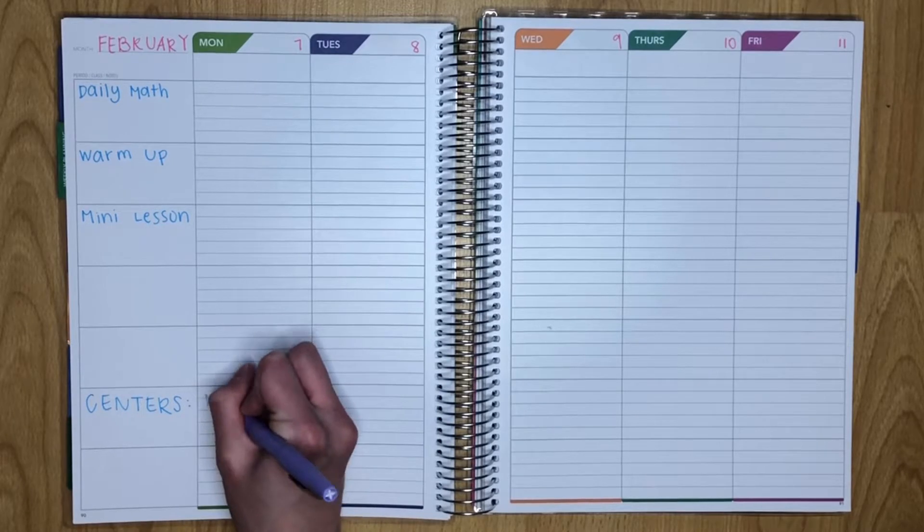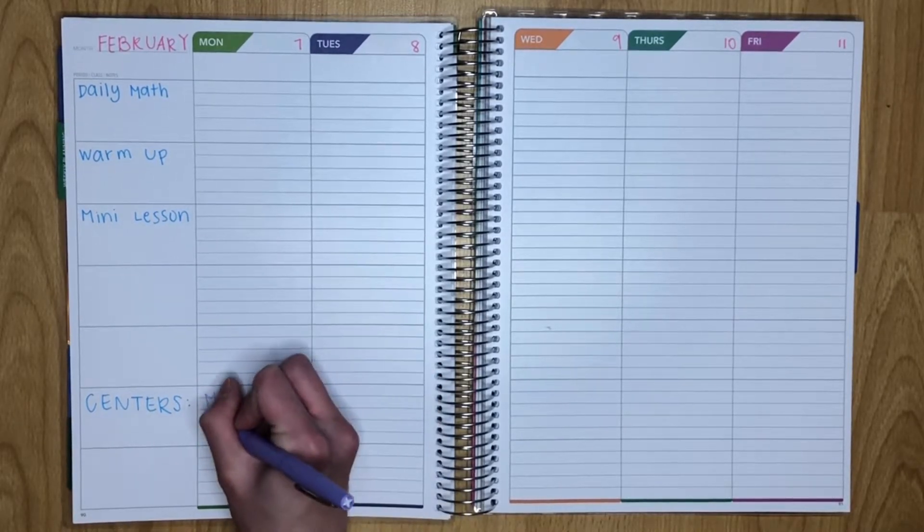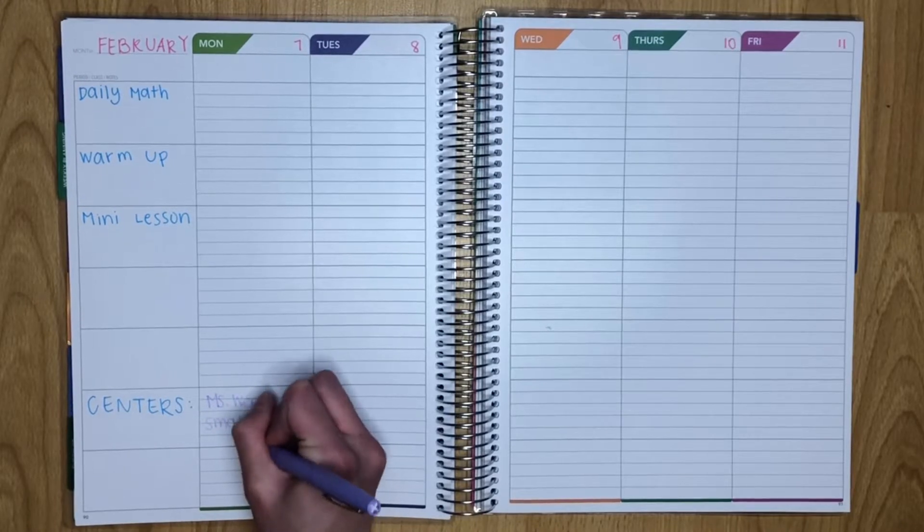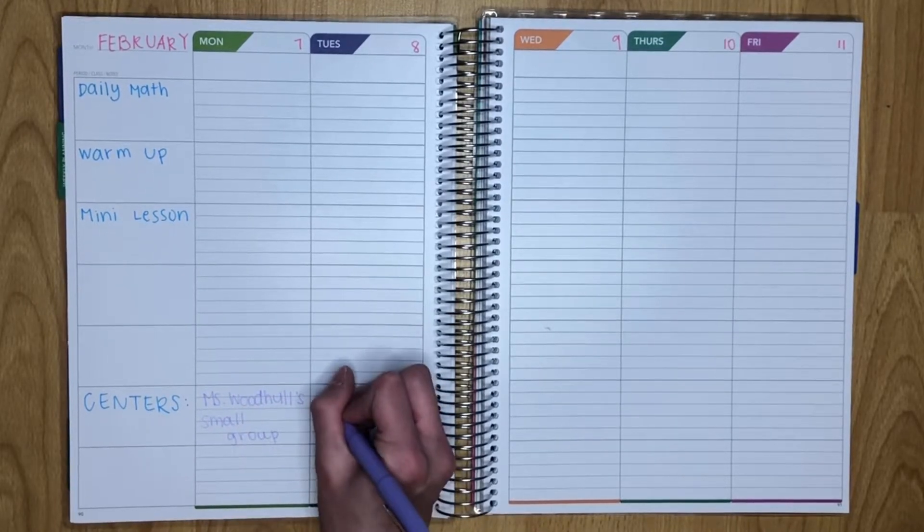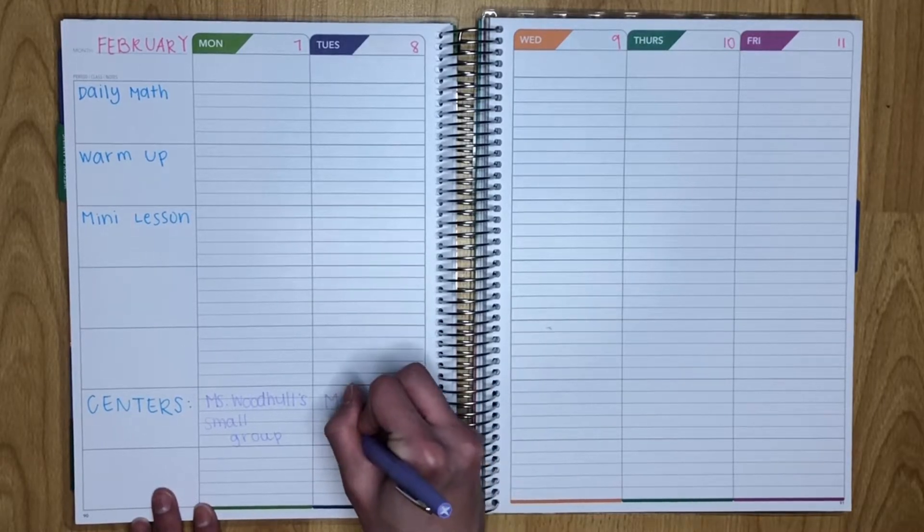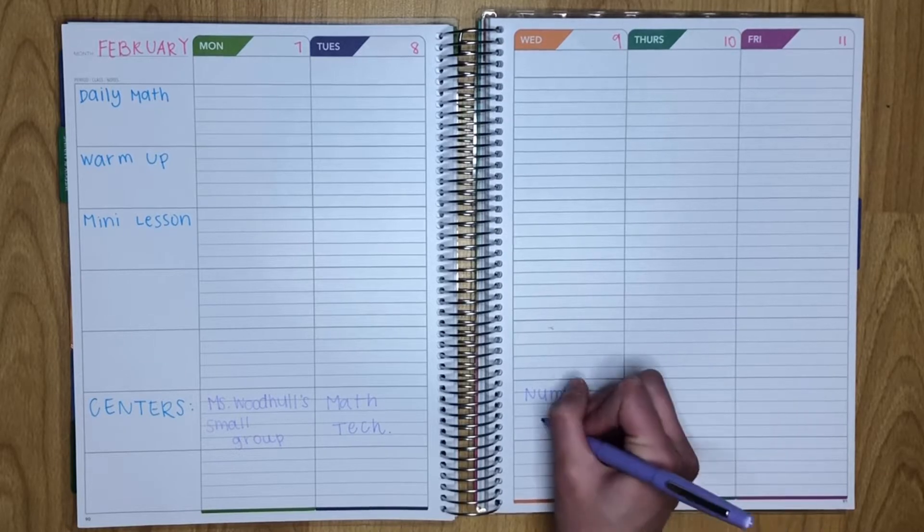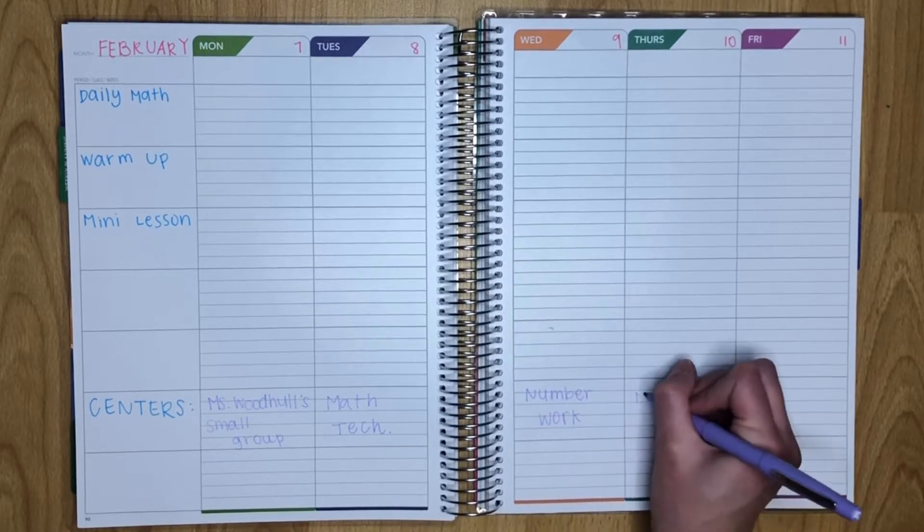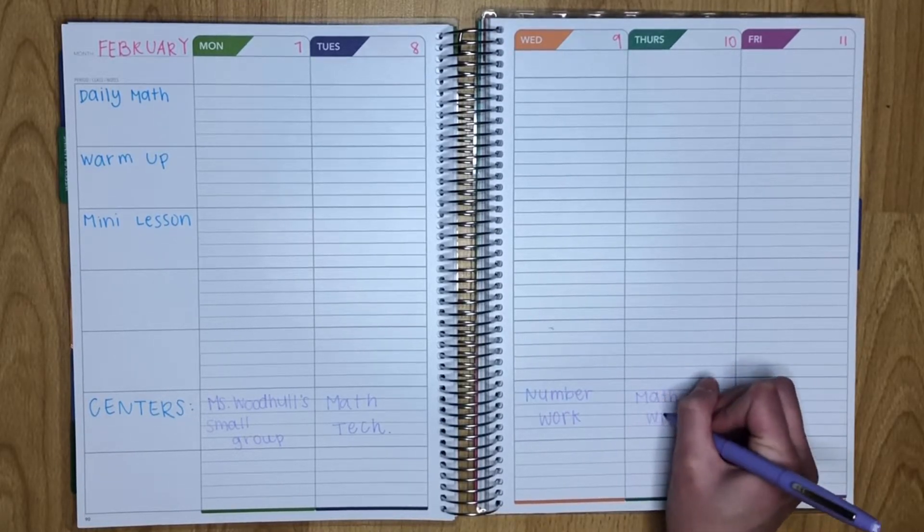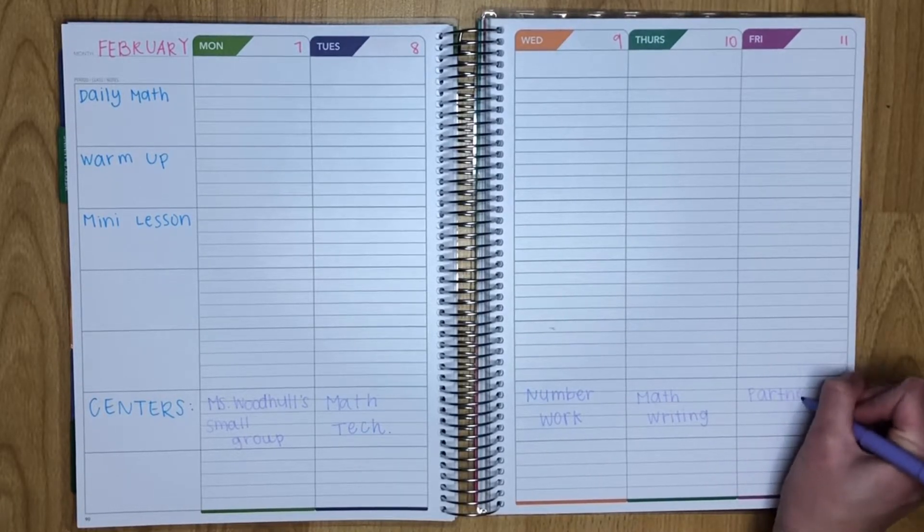So for centers, I have five different centers for the week. I have my small group, math technology, number work, math writing, and partner games. So throughout the week, whenever it is center time, my students get their choice of what center they want to work on for that day. And they work on them at their own pace throughout the week, unless if they are in my small group and I take one small group each day.